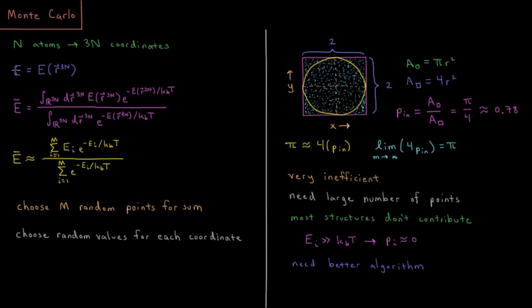So our energy, our total energy, our potential energy, that's a function of these 3N coordinates. And we mentioned in our ensemble properties video that the average energy or